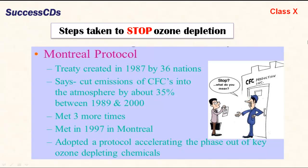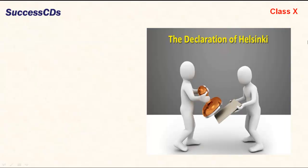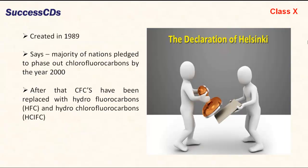The treaty met three more times, then again in 1997 in Montreal, adopting a protocol accelerating the phase-out of key ozone depleting chemicals. The Declaration of Helsinki, created in 1989, pledged the majority of nations to phase out chlorofluorocarbons by the year 2000. After that, chlorofluorocarbons have been replaced with hydrofluorocarbons and hydrochlorofluorocarbons.